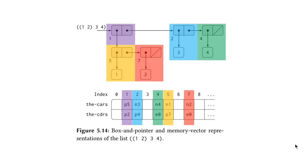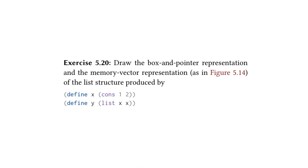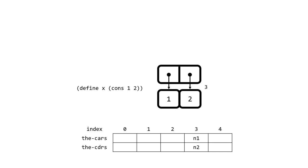This takes us to our first exercise, which is basically constructing one of these diagrams. Exercise 5.20 asks us to draw the box-and-pointer representation and the memory vector representation, as in figure 5.14, of the list structure produced by defining x to be cons of 1 and 2, and then defining y to be list of x and x. This is pretty straightforward if you've understood the previous figure. We'll start with defining x, which is just the cons of 1 and 2 — storing a 1 and 2 each in the car and cdr. We're storing it at index 3, because we're going to define y in a second, which uses x.